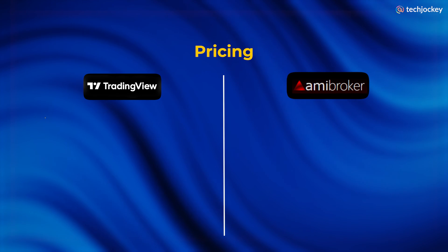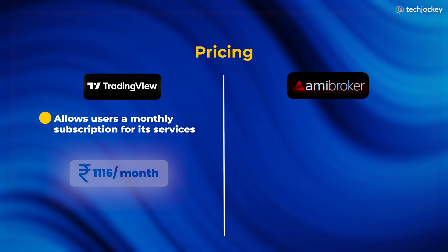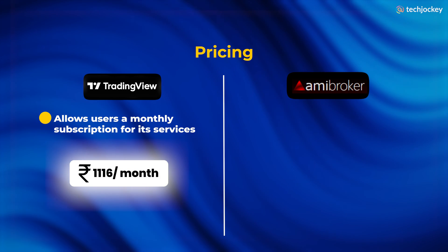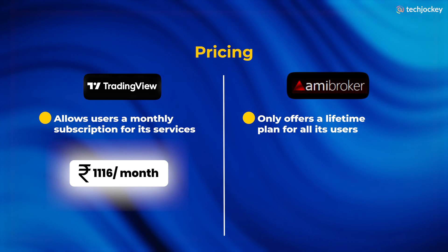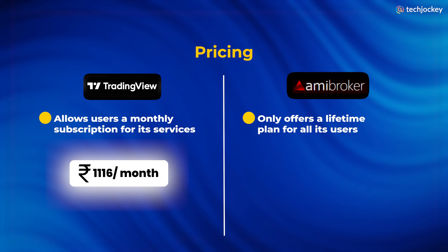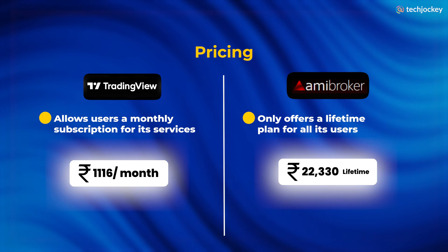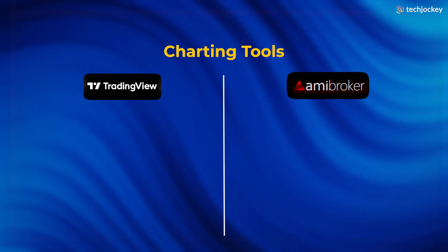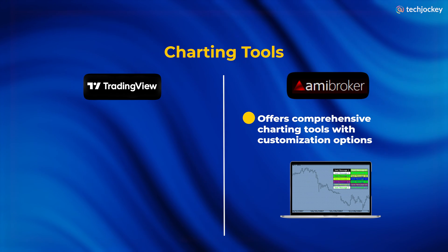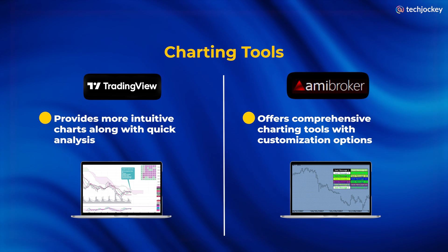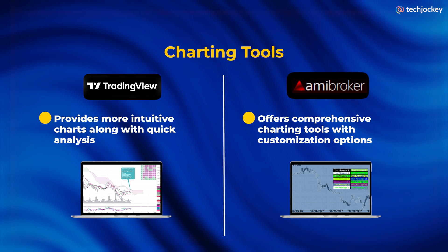On pricing, TradingView allows users a monthly subscription starting at Rs. 1,116 per month for its Pro plan, while MEBroker only offers a lifetime plan starting from Rs. 22,330. For charting tools, MEBroker offers comprehensive charting tools and customization options, however TradingView provides more intuitive charts along with quick analysis.